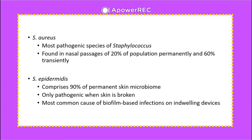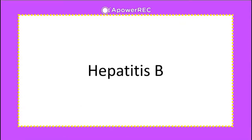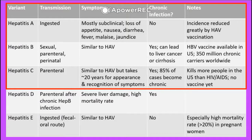Staphylococcus aureus is the most pathogenic species of the genus Staphylococcus. It is found in the nasal passages of 20% of the population permanently and 60% transiently. Staphylococcus epidermidis comprises 90% of the permanent skin microbiome and is only pathogenic when the skin is broken — making it an opportunistic pathogen and the most common cause of biofilm-based infections on indwelling devices, a frequent source of nosocomial infections.